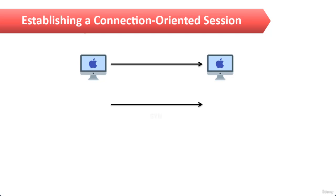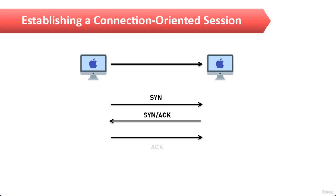Both hosts' application programs begin by notifying their individual operating systems that a connection is about to be initiated. The two operating systems communicate by sending messages over the network, confirming that the transfer is approved and both sides are ready for it to take place. After all of this is done, synchronization occurs, a connection is fully established, and the data transfer begins.